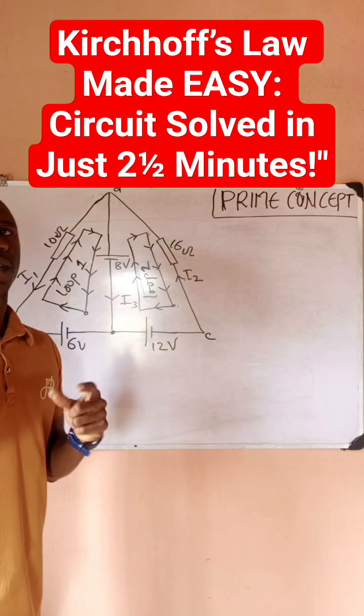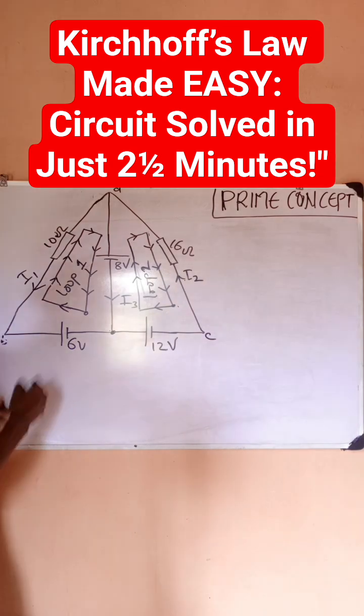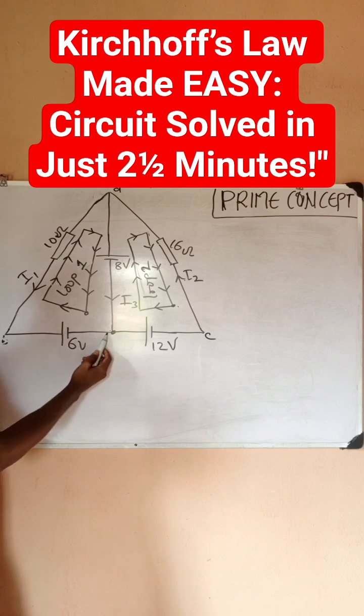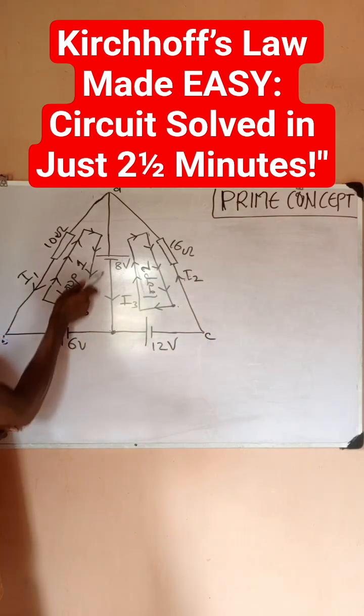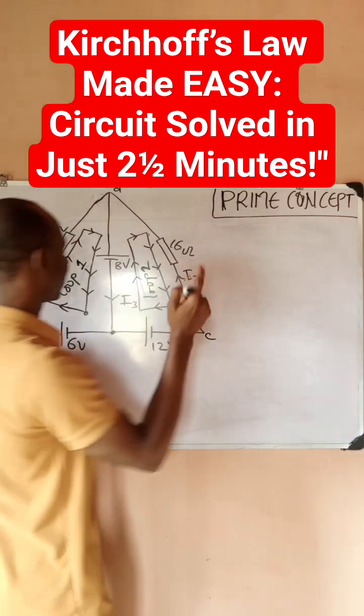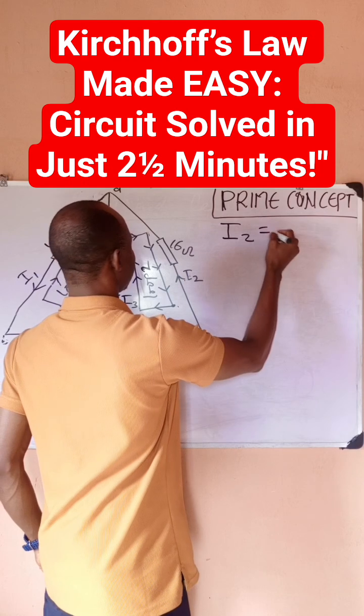Hello guys, Prime Concept. Once again we want to analyze this simple circuit in a very short time. Let's look at this junction. You notice that I1 is coming towards this junction, I2 is actually leaving this junction, then I3 is coming here. So applying KCL, you quickly get that I2, which is leaving, is going to be I3 plus I1.